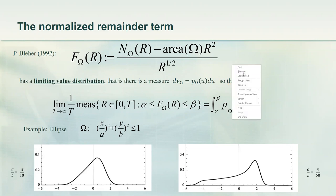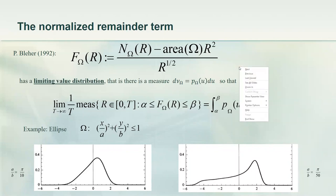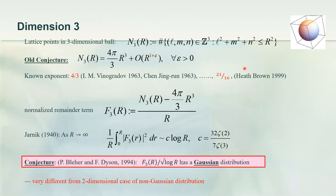This is all known stuff. Now I want to mention an open problem. Every shape has its own limiting distribution — they're different, not universal, but they do exist.